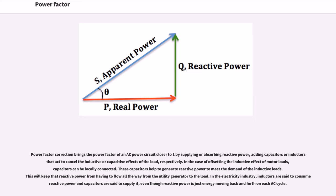Power factor correction brings the power factor of an AC power circuit closer to one by supplying or absorbing reactive power, adding capacitors or inductors that act to cancel the inductive or capacitive effects of the load, respectively. In the case of offsetting the inductive effect of motor loads, capacitors can be locally connected. These capacitors help to generate reactive power to meet the demand of the inductive loads, keeping that reactive power from having to flow all the way from the utility generator to the load. In the electricity industry, inductors are said to consume reactive power and capacitors are said to supply it, even though reactive power is just energy moving back and forth on each AC cycle.